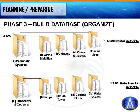Break down subfolders further — for example, 'Pneumatic Systems' contains valves and mufflers, cylinders, air knives and blowers, and hoses and lines. The smallest subfolders contain all parts with part numbers, specifications, and a code showing exactly where each part goes. For example, file 1A-I represents all valves for Welder 34, and 1E-IV represents the water lines.